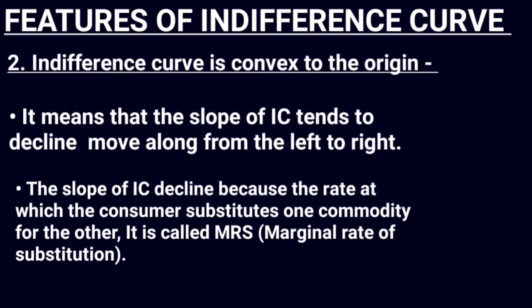The second point is that the Indifference Curve is convex to the origin. Convex means the slope goes from left to right, opposite to the origin. The slope of the IC declines because of the rate at which the consumer substitutes one commodity for another, which is called MRS — Marginal Rate of Substitution.